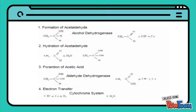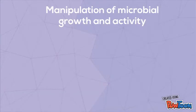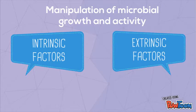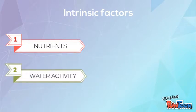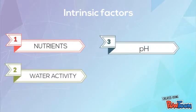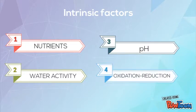This diagram shows the reaction involved in the formation of acetic acid. Manipulation of microbiome growth and activity refers to the ability of microorganisms to grow or multiply in food, which is determined by the food environment. This is designated as the intrinsic and extrinsic environment of food. By manipulating any of these factors, the activity of microorganisms within foods can be controlled. Intrinsic factors of the food environment include nutrients, water activity, hydrogen ion concentration, and oxidation-reduction potential.